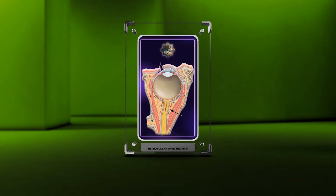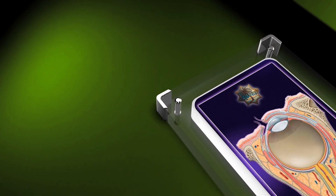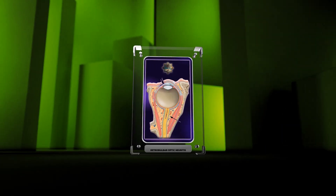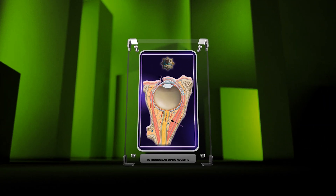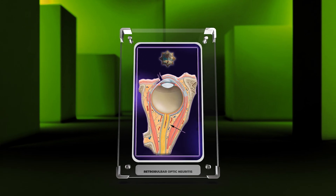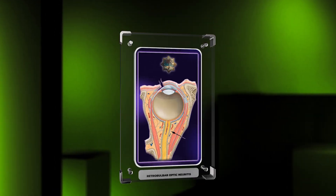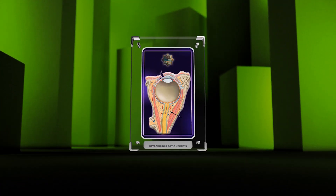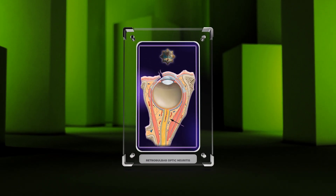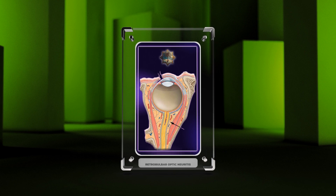Welcome, students, to today's lecture on Retrobulbar Optic Neuritis. In this comprehensive session, we will delve into the intricate details of the anatomy, etiology, clinical presentation, diagnosis, management, prognosis, and association with multiple sclerosis. By the end of this lecture, you will have a thorough understanding of this optic nerve disorder and its implications. So let's begin.